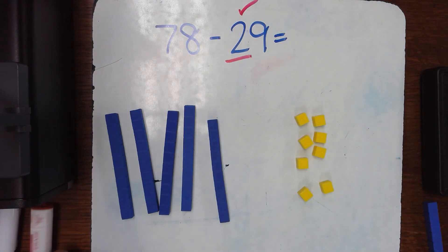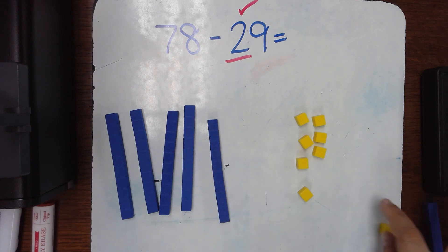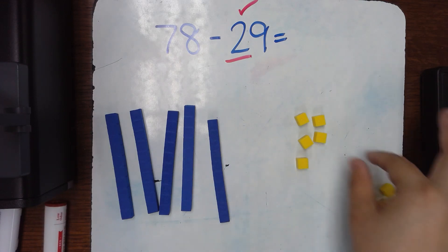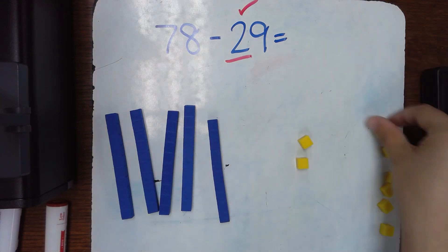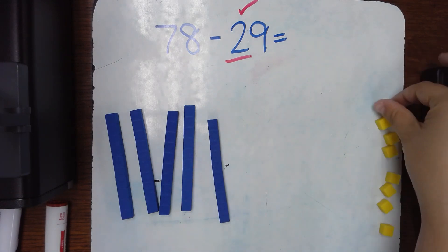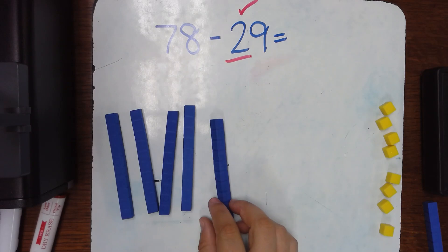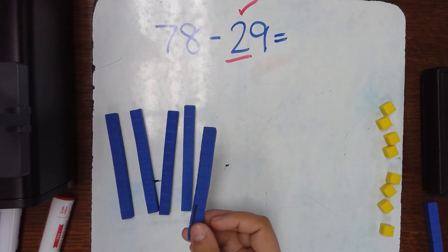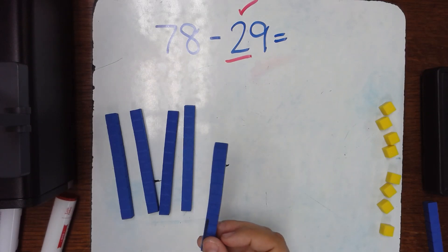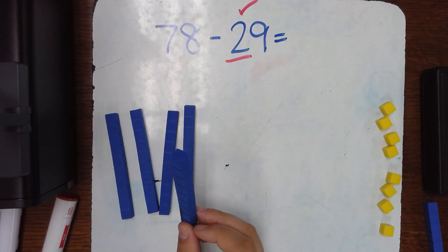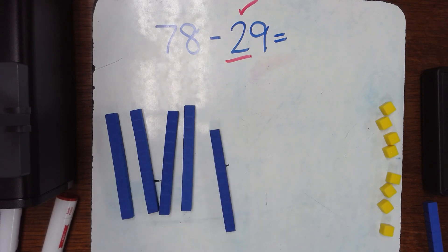Now I'm going to subtract 9. I've got 1, 2, 3, 4, 5, 6, 7, 8. Uh-oh, I've subtracted 8 but I haven't subtracted 9. So what I need to do is I need to change one of these into ten ones.